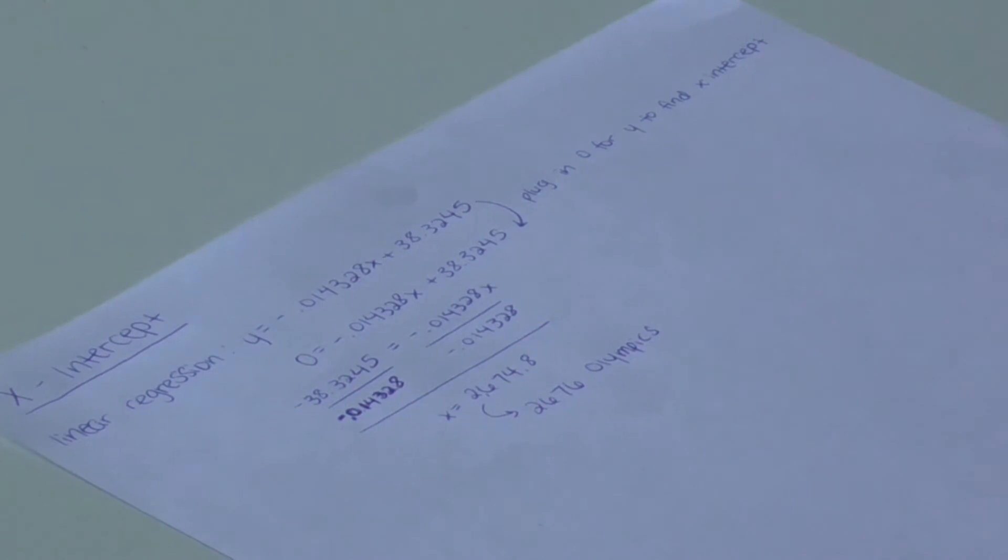To find the x-intercept, we plugged in zero for y and we got x equals 2674.8. The data we're using is at the Olympics, so we know it has to be a multiple of four. Therefore, our x-intercept is the 2676 Olympics.